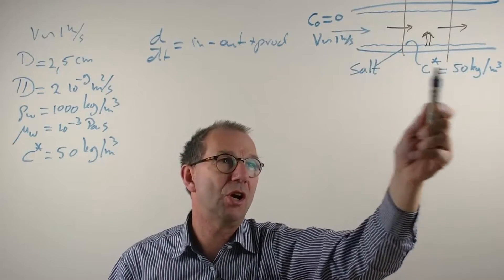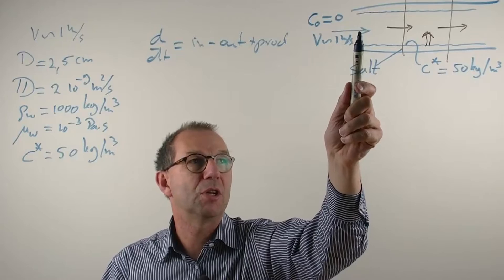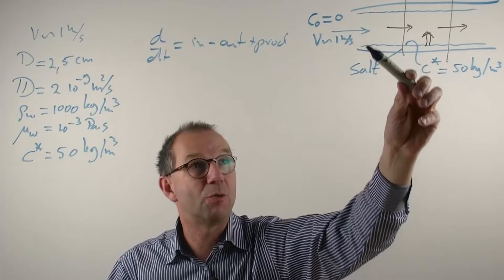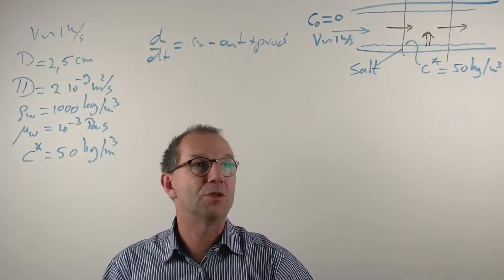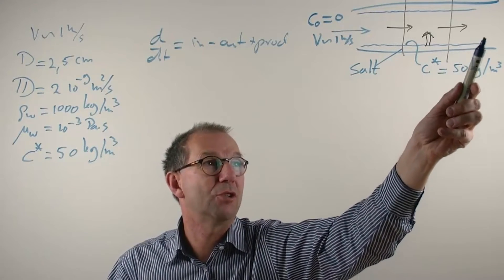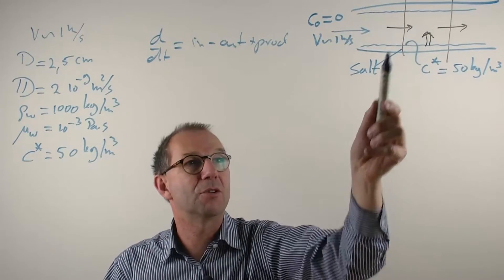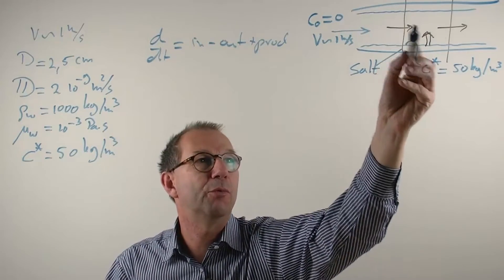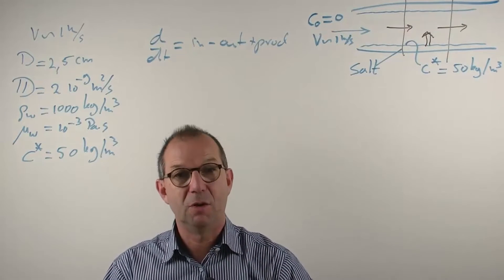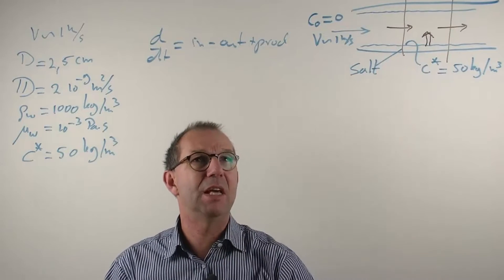We take not the entire tube as our control volume, because we know that here the water is still fresh, here it contains salts, so our driving force to start the entire process of cleaning is high here and gets smaller and smaller if we move further into the pipe. Because it's this concentration minus the bulk concentration. So we have to perform our balance for a very small part of the tube between x and x plus dx.